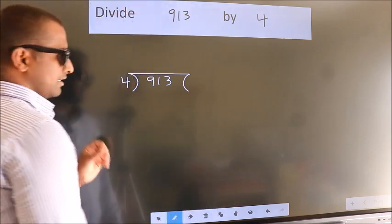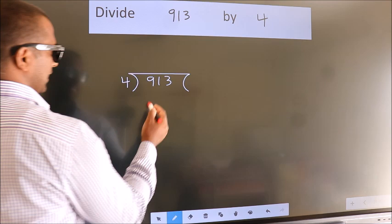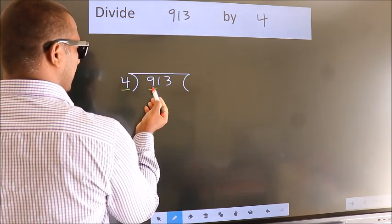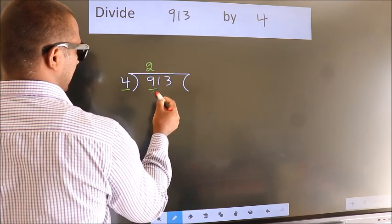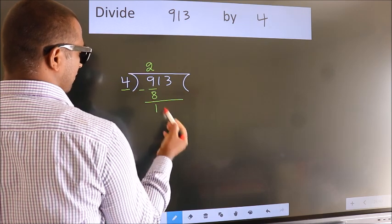This is your step 1. Next, here we have 9, here 4. A number close to 9 in the 4 table is 4 twos, 8. Now we should subtract. We get 1.